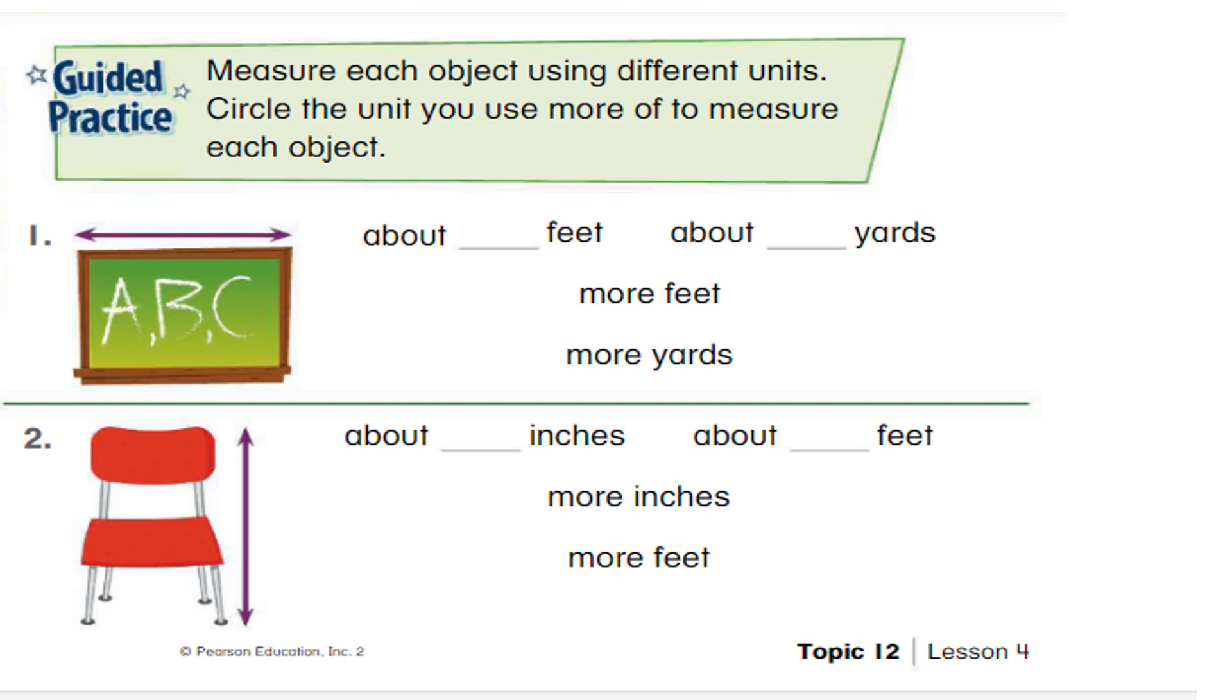So on the next page, we have to make measurements for the objects given in the pictures. And then we have to write in how many feet is it and about how many yards is the object. So I measured this board, black board or white, green board in my classroom. And I found out that this board was about 3 feet long and 1 yard long.